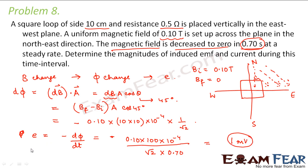So if this is the induced EMF, what would be the induced current? The induced current will be equal to induced EMF divided by resistance. What is the resistance of this loop? It is given as 0.5 ohms. So we can write 1 into 10 to the power minus 3 volts divided by resistance that is 0.5 ohms. It comes out to be 2 milli amperes. So this would be the induced current.